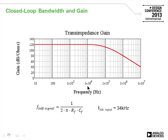Looking at the actual signal gain — the closed-loop gain with respect to the input current — the bandwidth is just equal to 1 over (2π × RF × CF), which works out to only about 34 kilohertz.